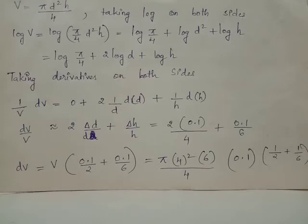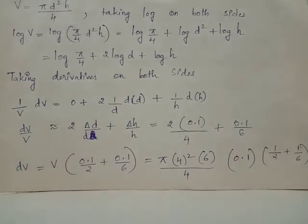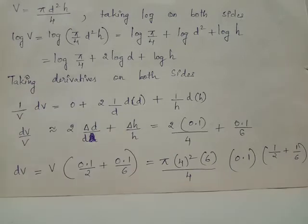With the particular values δd = δh = 0.1, diameter d = 4 cm, and altitude h = 6 cm, the right-hand side can be rewritten accordingly. When we multiply volume V to the right-hand side, we have dV = (π/4) × 4² × 6 × 0.1 × (1/2 + 1/6).